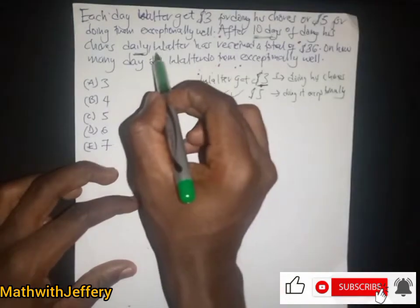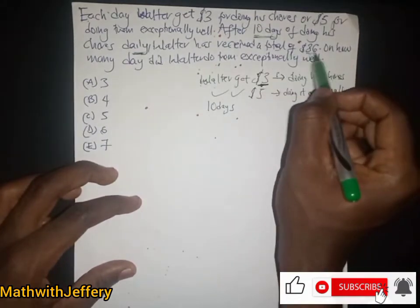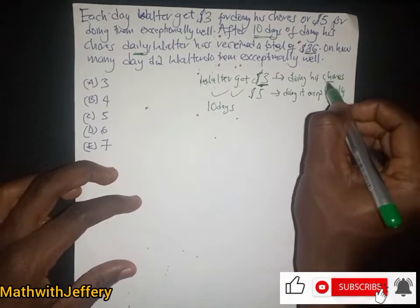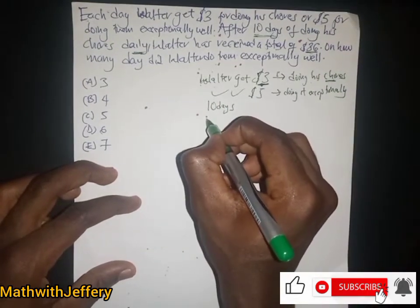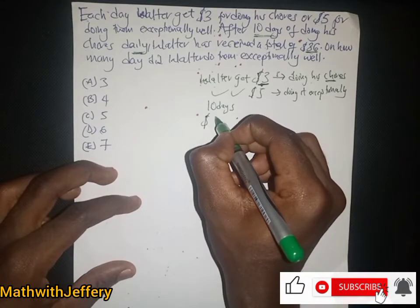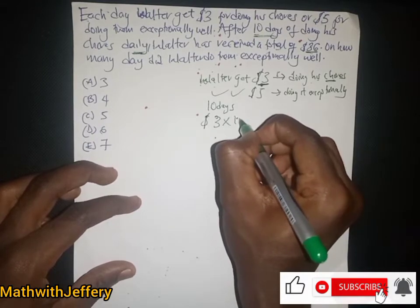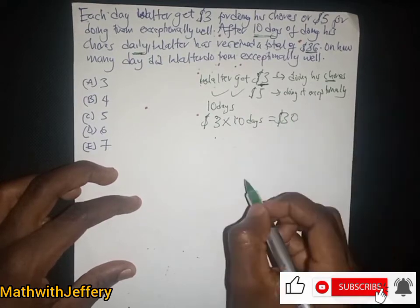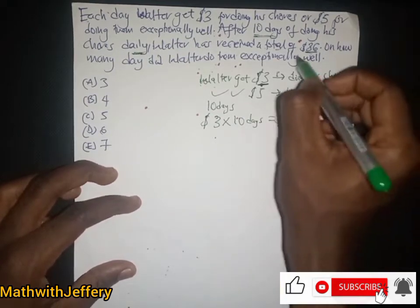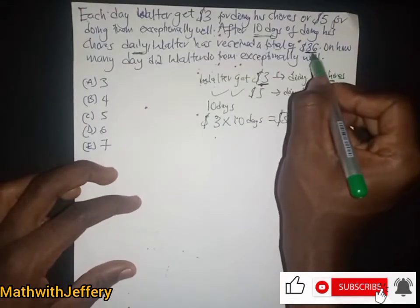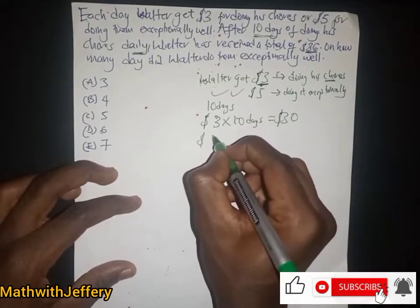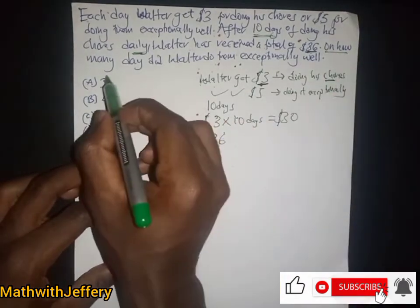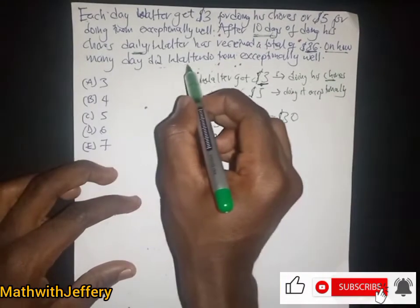Water has received a total of 36 dollars. Now if Water is doing the chores daily on a normal basis, then we have three dollars multiplied by 10 days, giving us 30 dollars. But after the 10 days, Water has received 36 dollars as the total amount. The question asks: on how many days did Water do them exceptionally well?